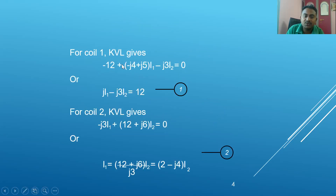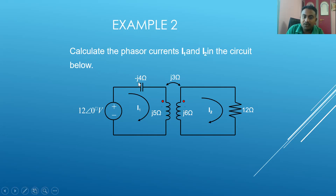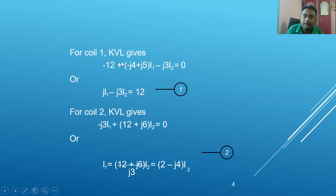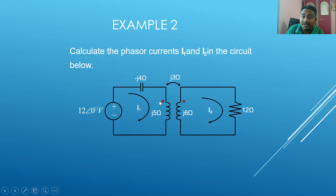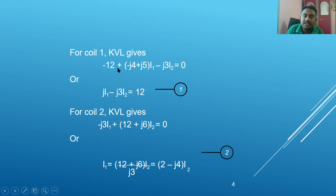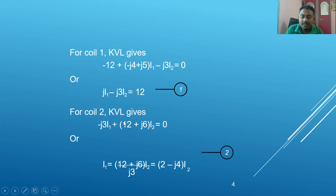Writing the first KVL equation: −12 (supply voltage) + i1 × (j5 − j4) — the total reactance in loop one is j5 − j4. For the mutual inductance term, since the currents enter in opposite directions, we use a negative sign: −j3 × i2. Simplifying, we get j1·i1 − j3·i2 = 12 — this is Equation 1.